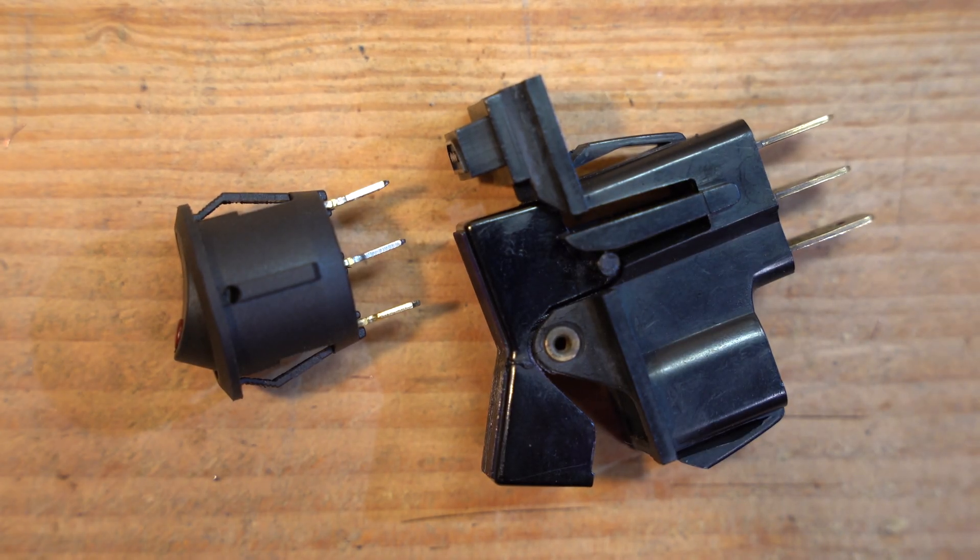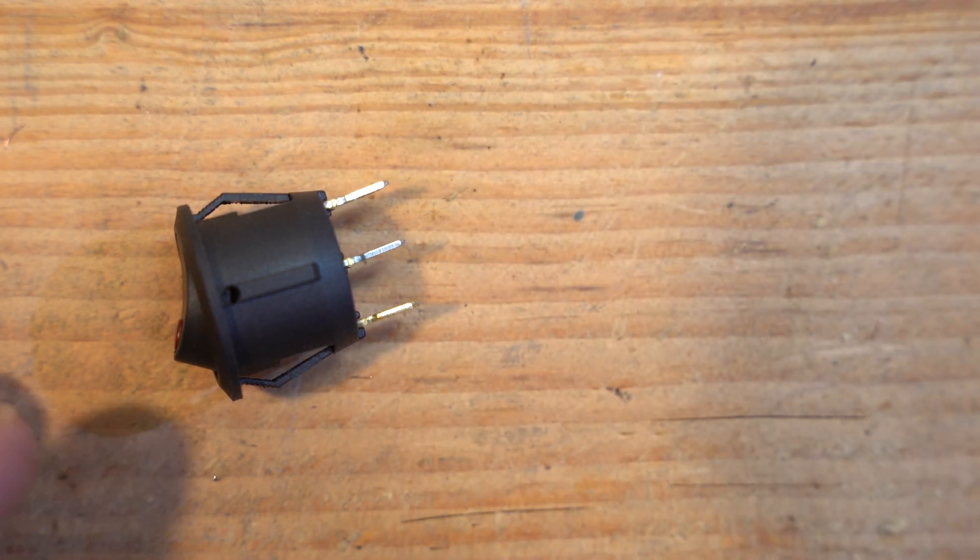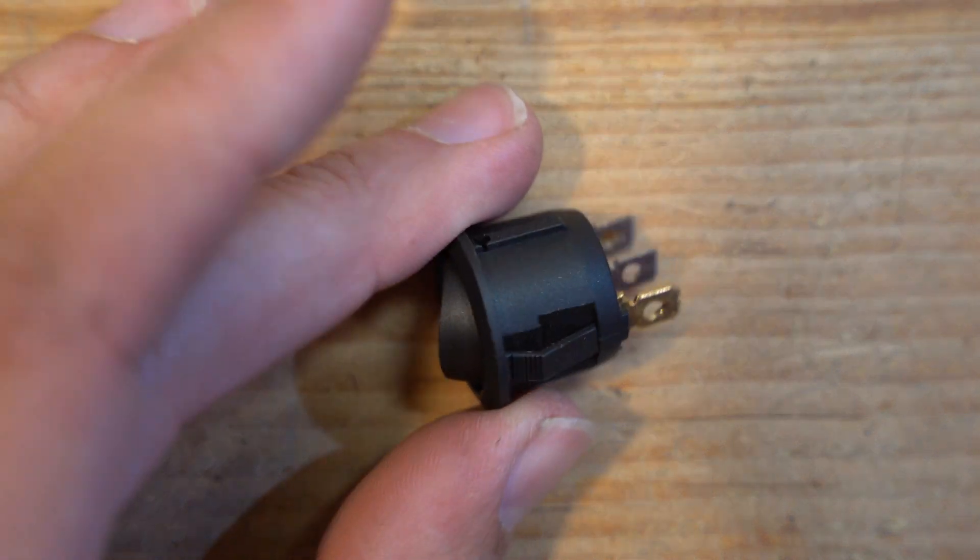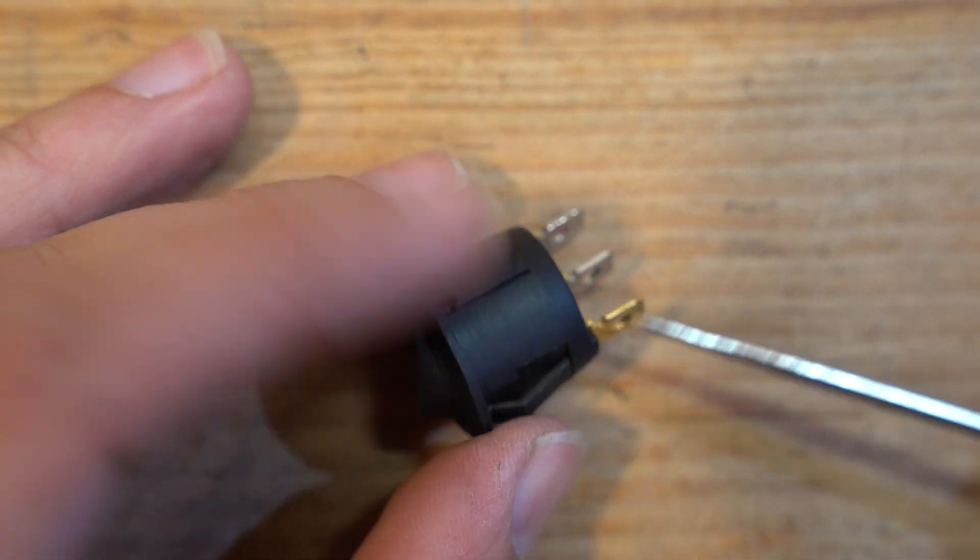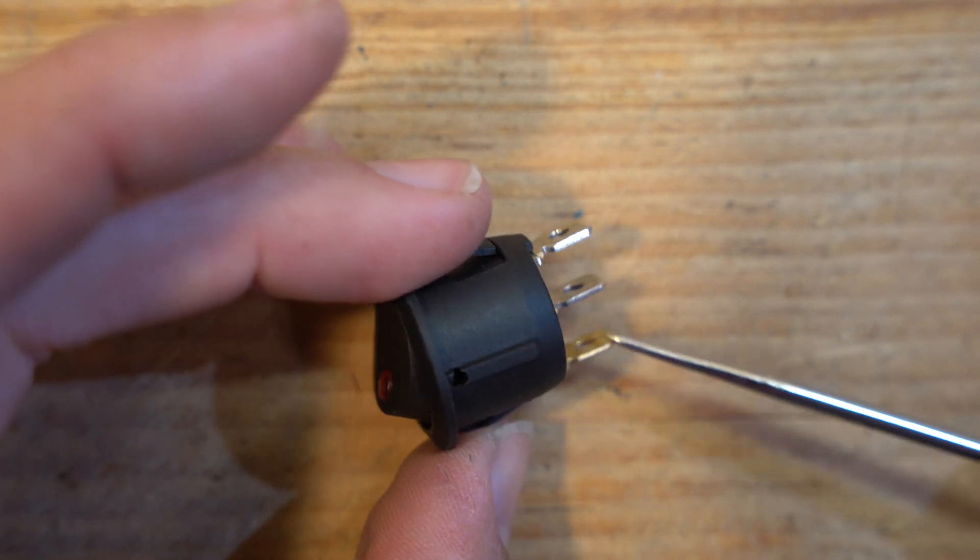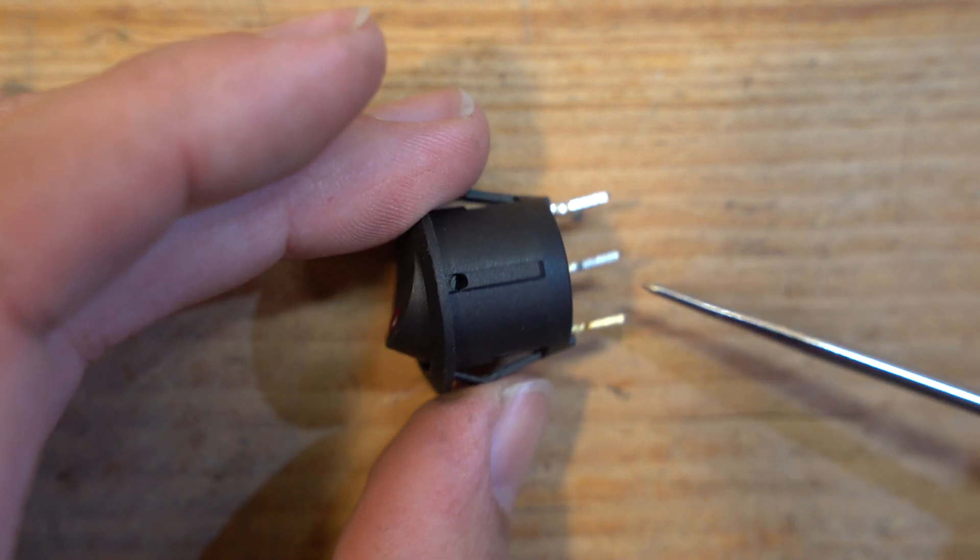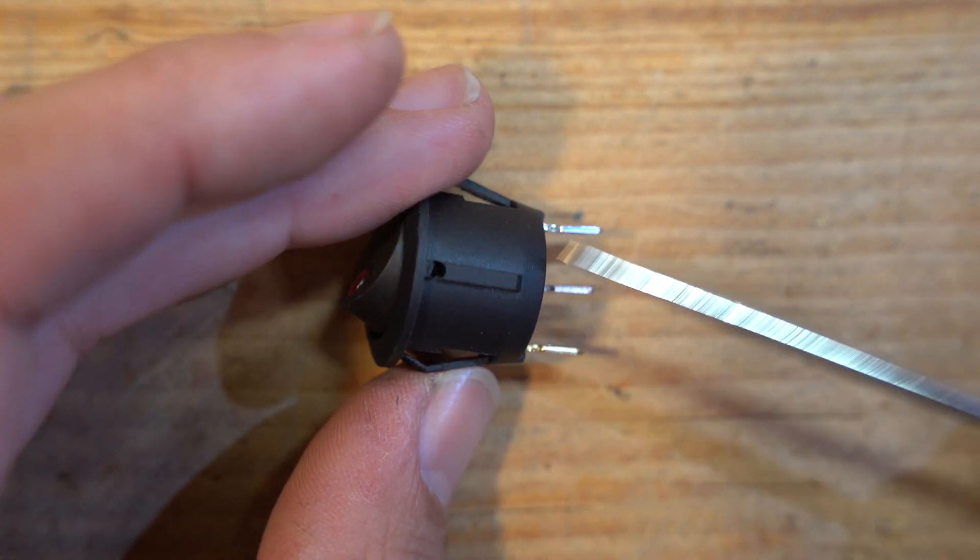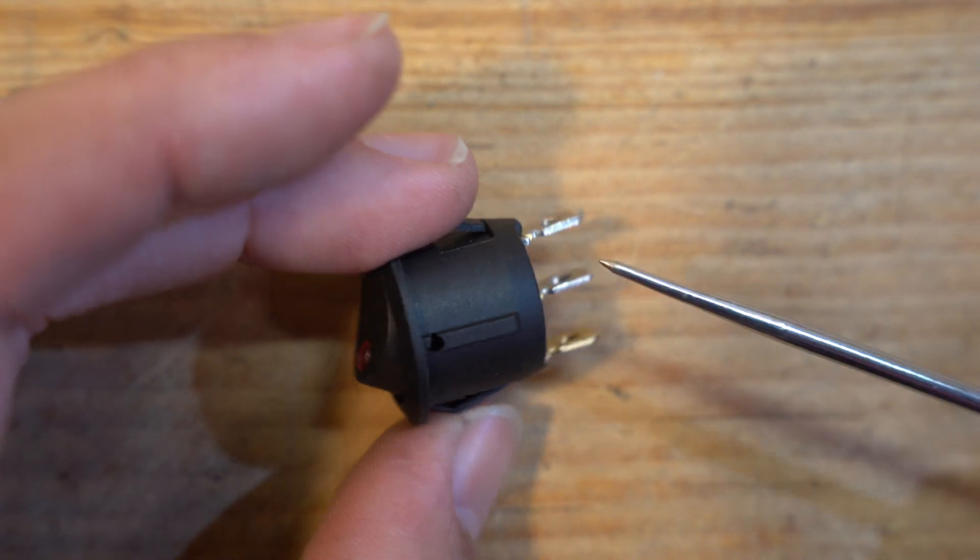So in the end, what this really came down to was a fundamental difference in how these two switches work. First of all, the one that came with the kit, what threw me off is this ground lug here. So you can see it's a different color, and that's how you know it's the ground. What threw me off is I figured, oh, the switch must need a ground for some reason. No, you don't want the switch to ground, you don't want this incoming power to ground out here because you're going to end up with a meltdown like what I had.